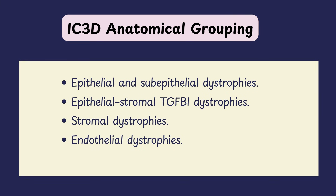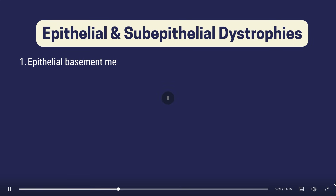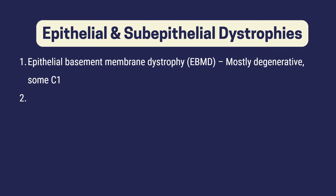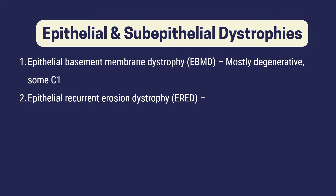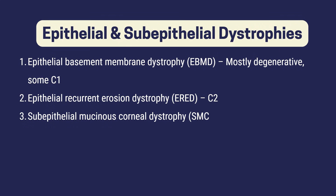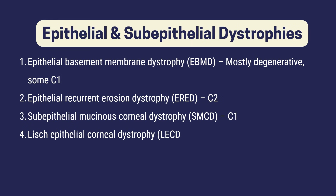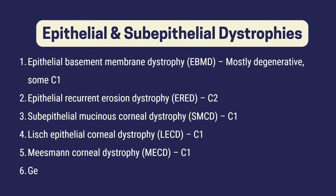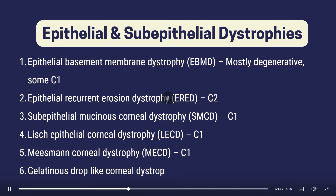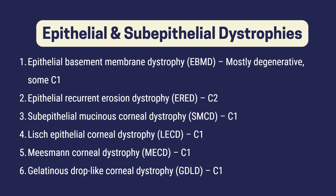This is the latest third edition IC3D classification from 2024. The first category is the epithelial-subepithelial dystrophies. As the name suggests, these affect the corneal epithelium and the subepithelial level — that's the basement membrane. This group includes six dystrophies: epithelial basement membrane dystrophy (EBMD), epithelial recurrent erosion dystrophy, subepithelial mucinous corneal dystrophy, Lisch epithelial corneal dystrophy, Meesmann's corneal dystrophy, and gelatinous drop-like corneal dystrophy.